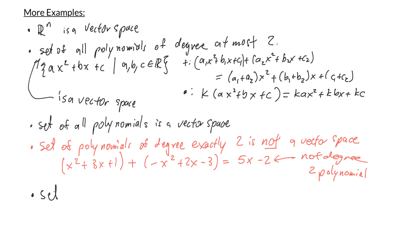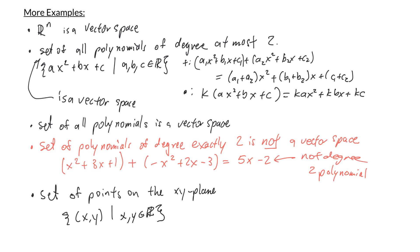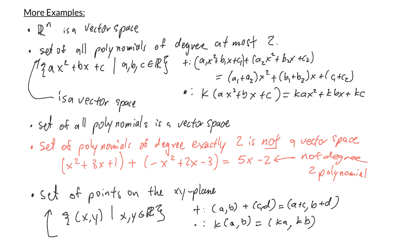One last example is the set of points on the xy plane — the set of points (x, y) where x and y are real numbers. Vector addition is (a,b) + (c,d) = (a+c, b+d), and scalar multiplication is k·(a,b) = (ka, kb). With these operations, the set of points on the xy plane is a vector space. These examples show that things you don't traditionally think of as vectors — like points and polynomials — can be thought of as vectors. In the next video, we'll look at vector subspaces.